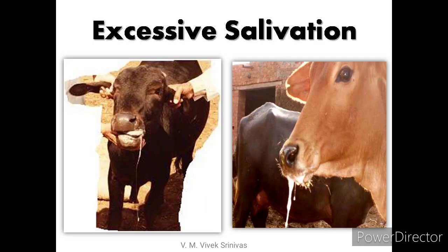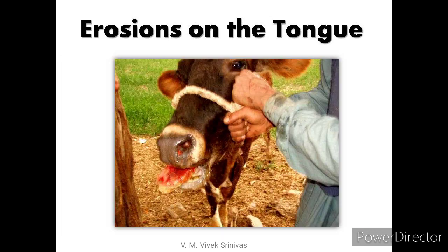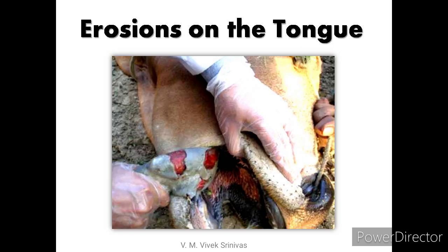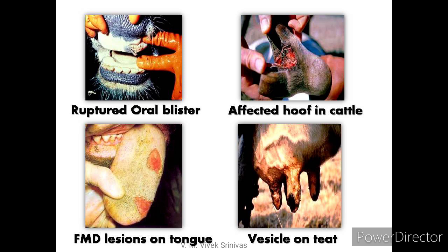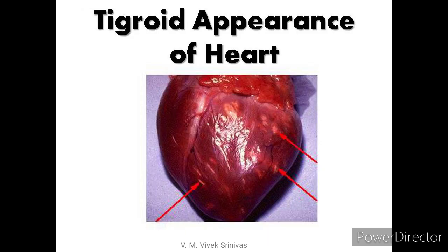Pictures depicted include: excessive salivation in cattle, erosions on the tongue in cattle, lesions at the interdigital space between hooves, ruptured oral blisters, affected hoof, lesions on the tongue, vesicles on the teat, and the tigroid appearance of the heart due to necrosis of cardiac muscle — the pathognomonic post-mortem lesion in FMD-infected calves.